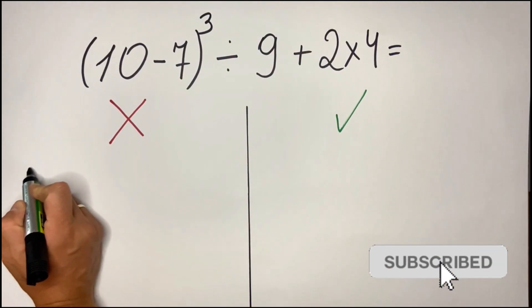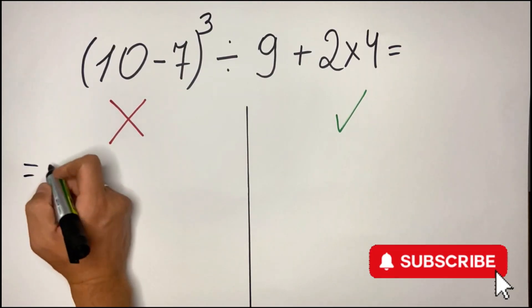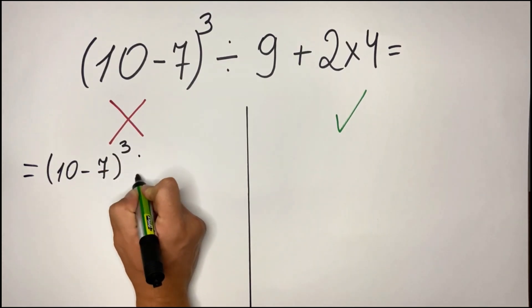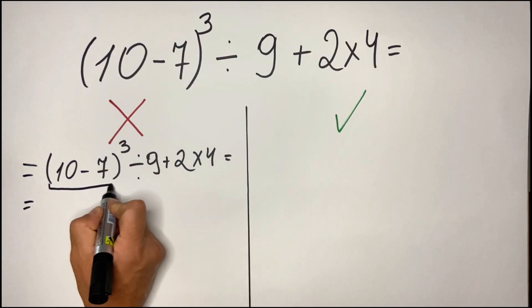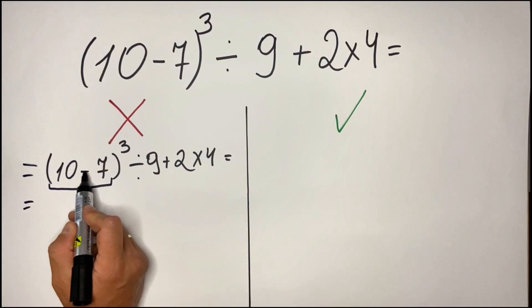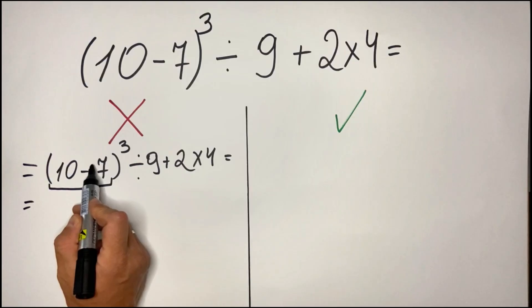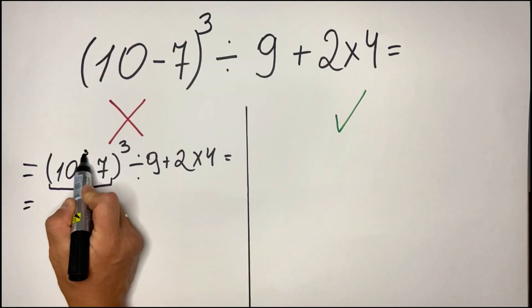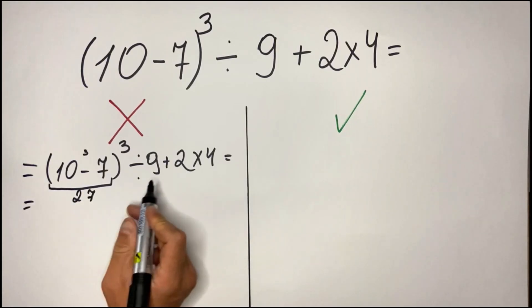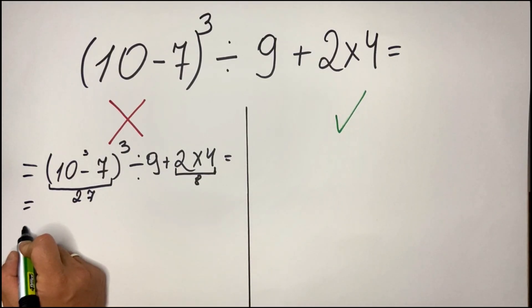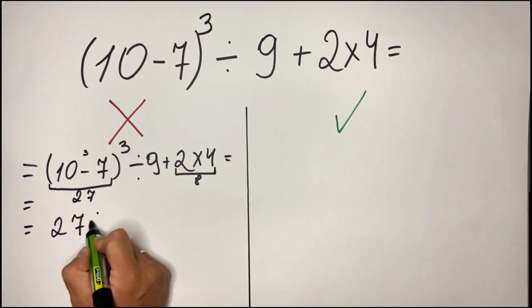So let's just take the example, it's quite a long one. So here we have 10 minus 7, so here we have 3, so basically 3 cubed is 27. So what we get here is 27 divided by 9 plus 4, so the most common mistake here people are doing this one.